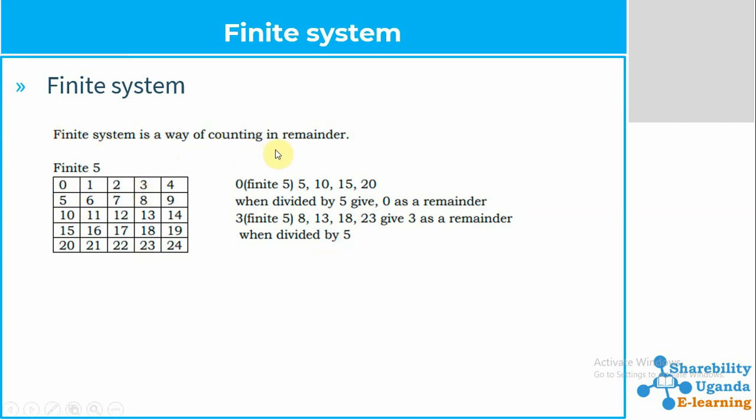A finite system is a way of counting numbers — counting in remainders. When they give you a number and they want you to show, for example, three finite five, or to add using a finite system, that means we shall be dealing with remainders.